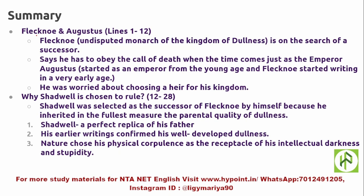The first section, lines 1 to 12, compares Flecknoe and Augustus. Flecknoe, the undisputed monarch of the Kingdom of Dullness, is searching for a successor — someone who will spread dullness even further and who is more stupid than himself. He says he must obey the call of death, just as the great Emperor Augustus did, because even Augustus, who was so powerful, obeyed the call of death.